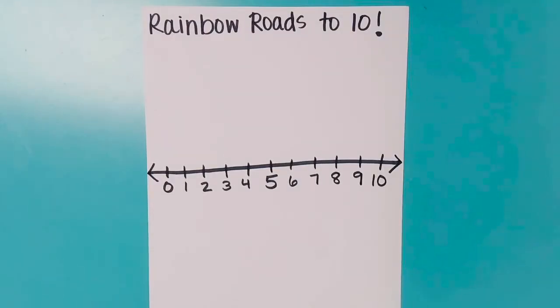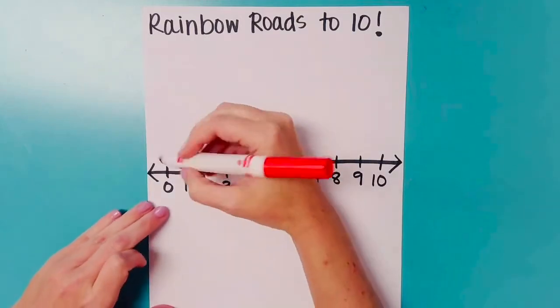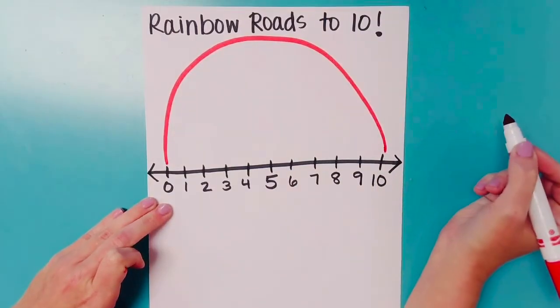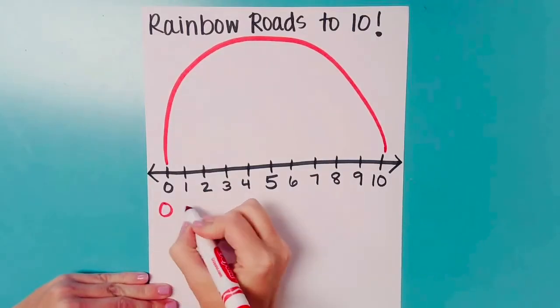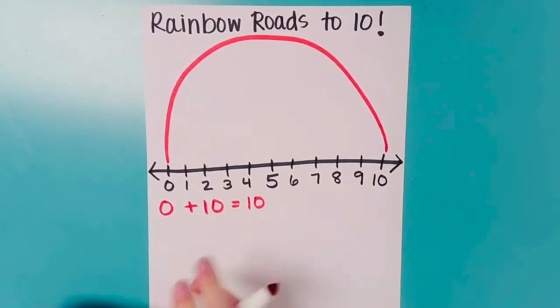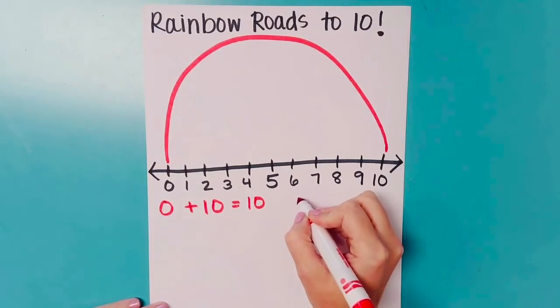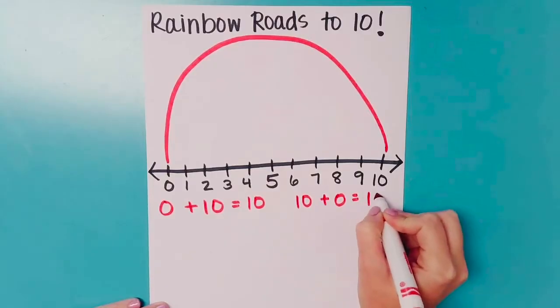And now we are ready to make our rainbow. What color are we going to start with first? What's going to be on the outer edge? Red. We're going to connect 0, big arc, all the way to 10. Because 0 and 10 make 10. So let's write our red fact underneath. Is there another way I can write 0 and 10? We can flip-flop the addends. 0 and 10 is the same as 10 plus 0. They both equal 10.